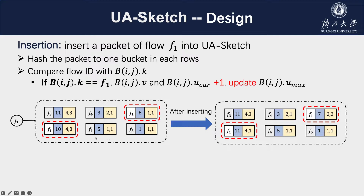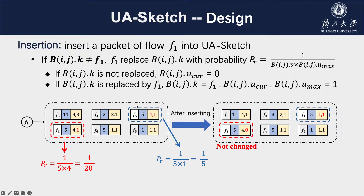In the second insertion example, the two hashed buckets store other flows. For the bucket with the red dashed box, the max UI count is four and the estimated flow size is five, so the replacement probability is one-twentieth — flow two is hardly replaced by flow one. But the packet arrival of flow two is interrupted, so the current UI count is reset to zero. For the bucket with the blue dashed box, the max UI count is only one, and both buckets have the same estimated flow size. The replacement probability for the blue bucket is much larger than the red one, so flow one easily replaces flow six. The UI count and max UI count are then cleared and reset to one.